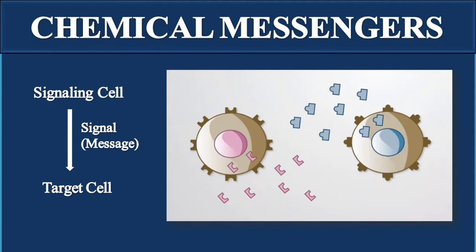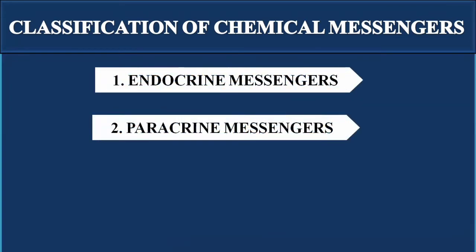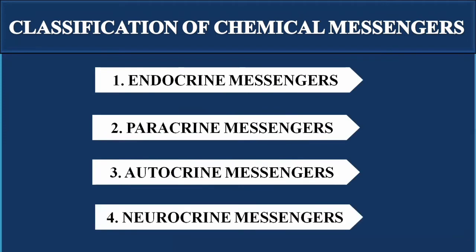Chemical messengers are classified into different types based on the distance between cells. In the human body, different types of cells communicate by releasing chemical messengers. These are classified as endocrine messengers, paracrine messengers, autocrine messengers, and neurocrine messengers.